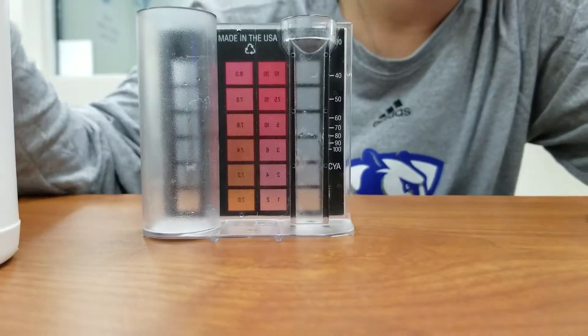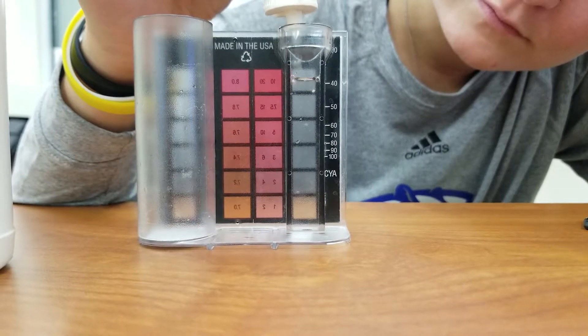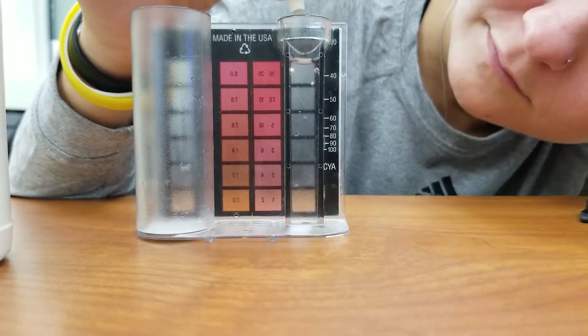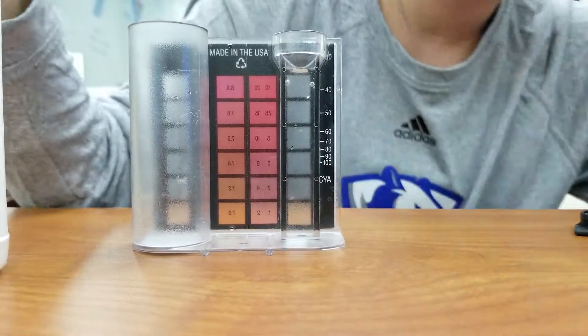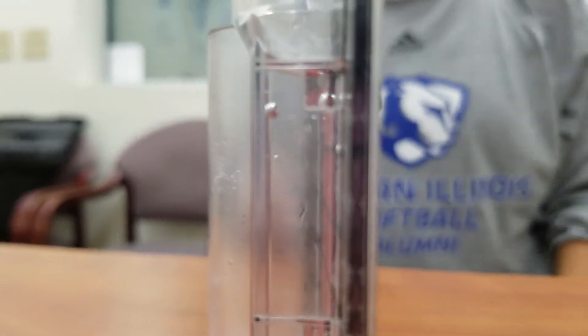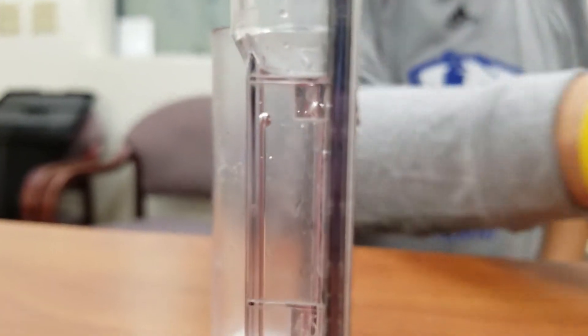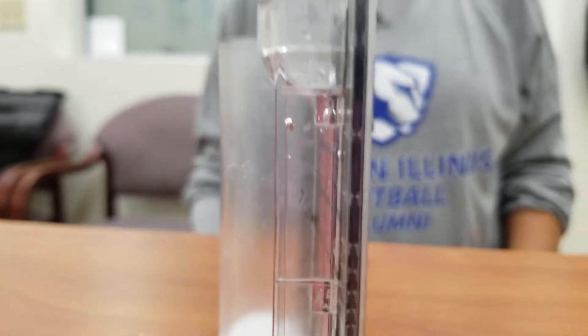Next up, we're going to test our total chlorine, which will also help us figure out our combined chlorine. We'll use the small side of the compartment or tube and go up to the 9 mark. If you see the little mark there, the bottom of the bubble, that's where we want our water line to be.